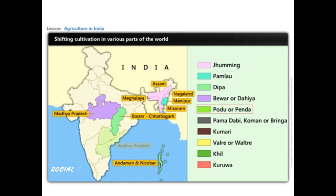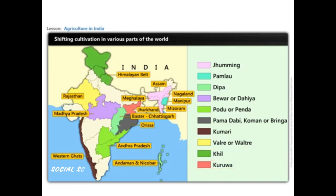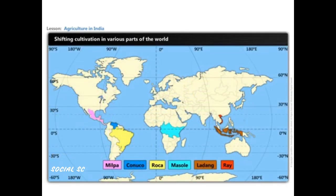It is also called Podu or Penda in Andhra Pradesh; Pama, Dhabi, Koman, or Bringa in Orissa; Kumari in the Western Ghats; Walre in south-eastern Rajasthan; Kil in the Himalayan belt; and Kurwa in Jharkhand. It is known by different names in other countries too — Milpa in Mexico and Central America, Conuco in Venezuela, Roca in Brazil, Masoli in Central Africa, Ladang in Indonesia, and Ray in Vietnam.